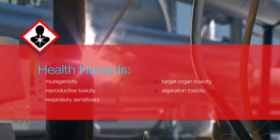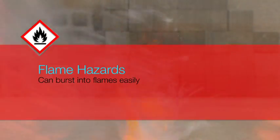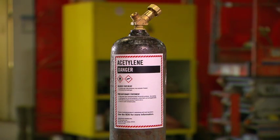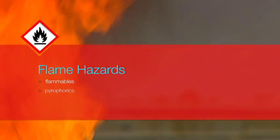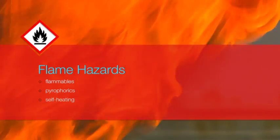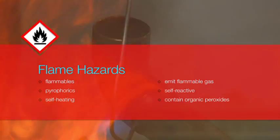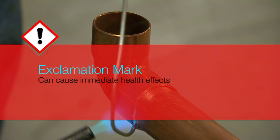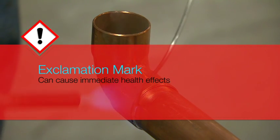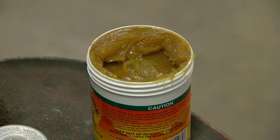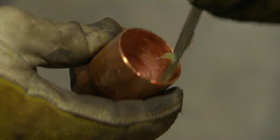The next pictogram is for flame hazards. The flammable chemicals covered by this pictogram can burst into flames fairly easily. Acetylene would be an obvious example in our line of work. Chemicals that fall under the flame pictogram include flammables, pyrophorics, and substances that could be self-heating, emit flammable gas, are self-reactive, or contain organic peroxide. The exclamation mark pictogram covers chemicals that can cause immediate health effects, such as skin rashes or respiratory irritation. One example is soldering flux, which can cause eye irritation, allergic skin reactions, and respiratory irritation.